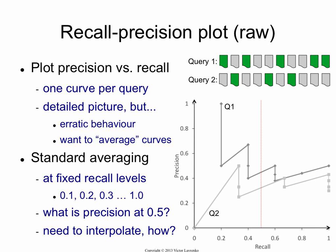So how can you do that? Say we have one query, and those are the relevant documents. If we plot precision against recall, we're going to get numbers that kind of look like that.